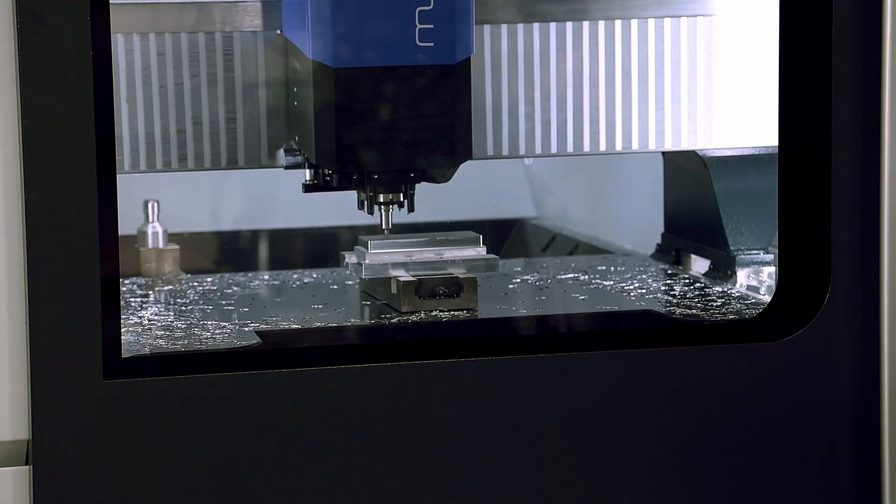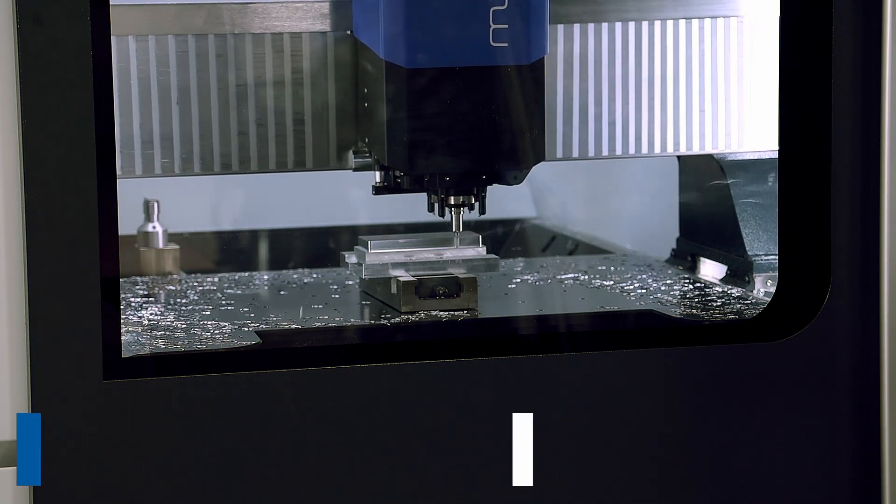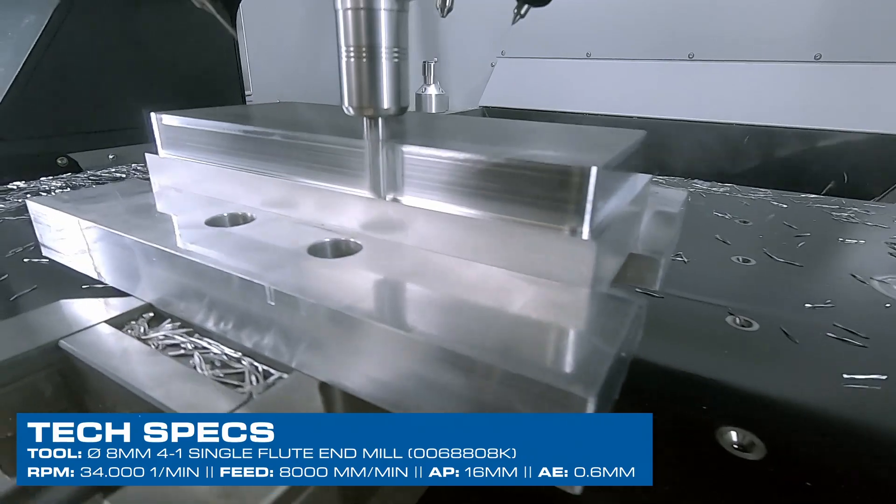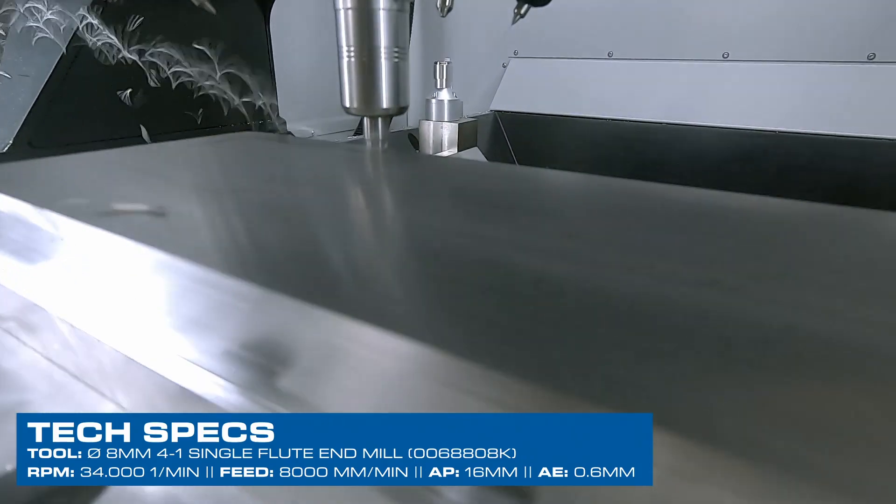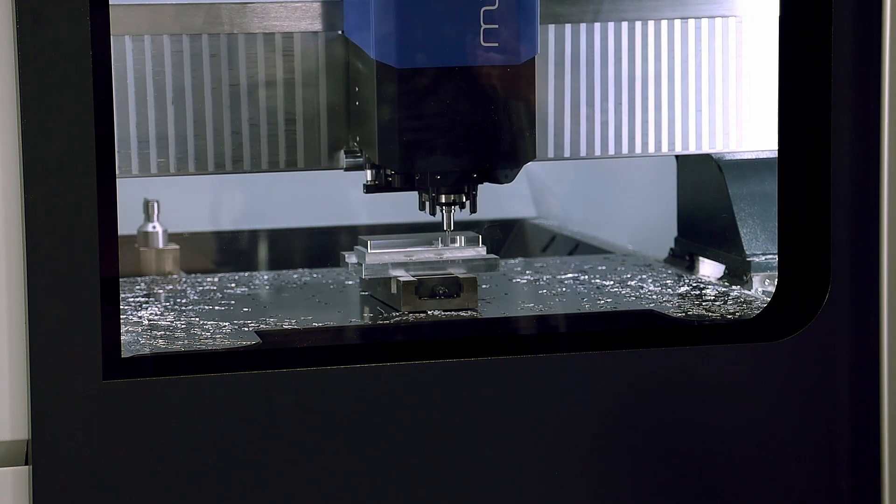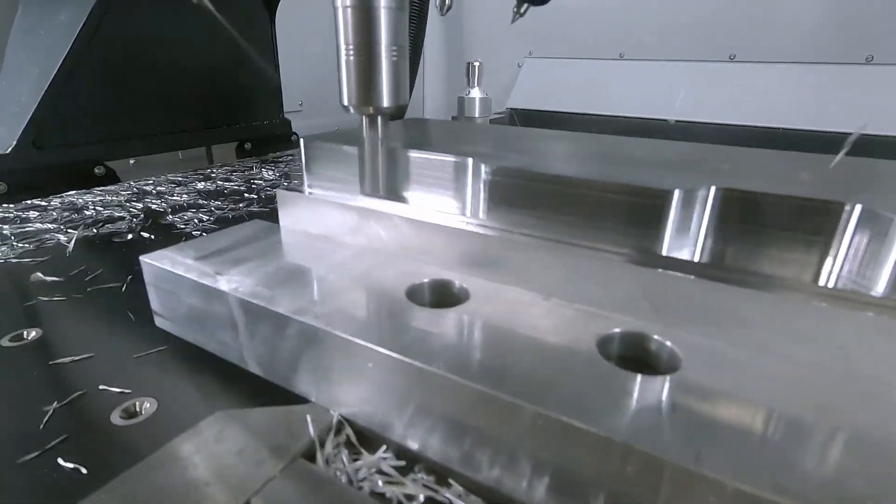Speaking about speeds and feeds with this particular tool, we go full depth and a step over of 7.5 percent of the diameter which is kind of a rule of thumb. So I always try to keep that step over for dynamic processes between 5 and 10 percent of the tool diameters.